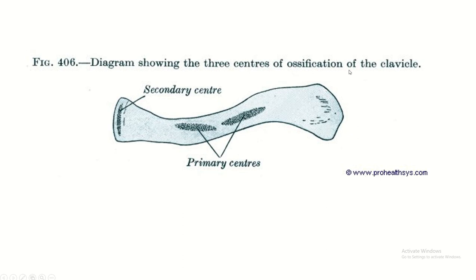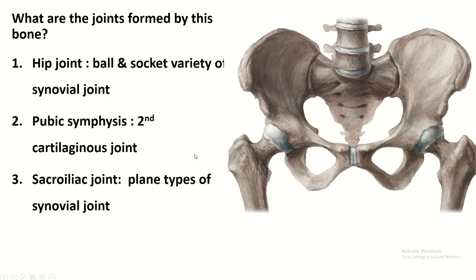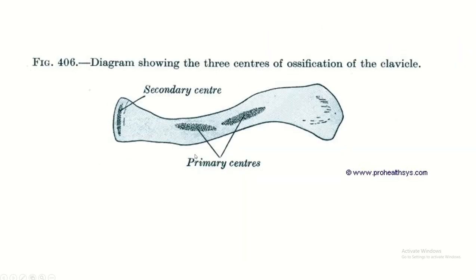Ossification centers of the clavicle: two primary ossification centers, and one secondary ossification center for the sternal end of the clavicle. Thank you for watching.